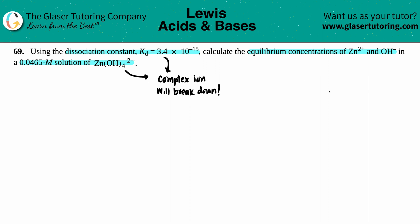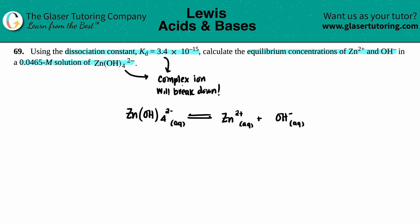The problem tells us the ions are Zn²⁺ and OH⁻, so we don't have to worry about finding the charges. Let's write the balanced equation: we start with the complex ion and break it into its two components. Zn(OH)₄²⁻ (aqueous) goes to Zn²⁺ (aqueous) and OH⁻ (aqueous). Make sure to balance — there are four hydroxides on the left, so we place a coefficient of 4 in front of OH⁻.